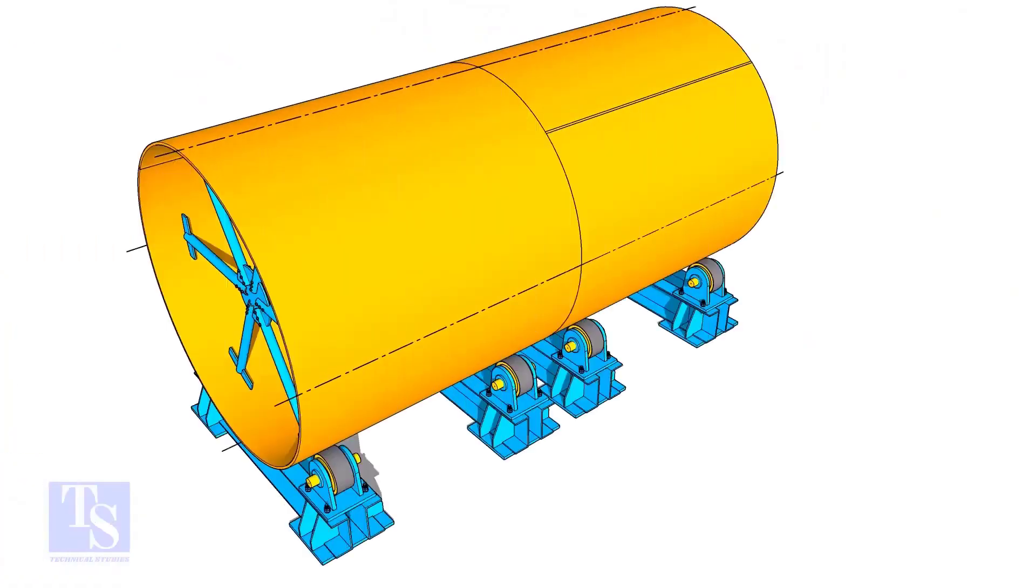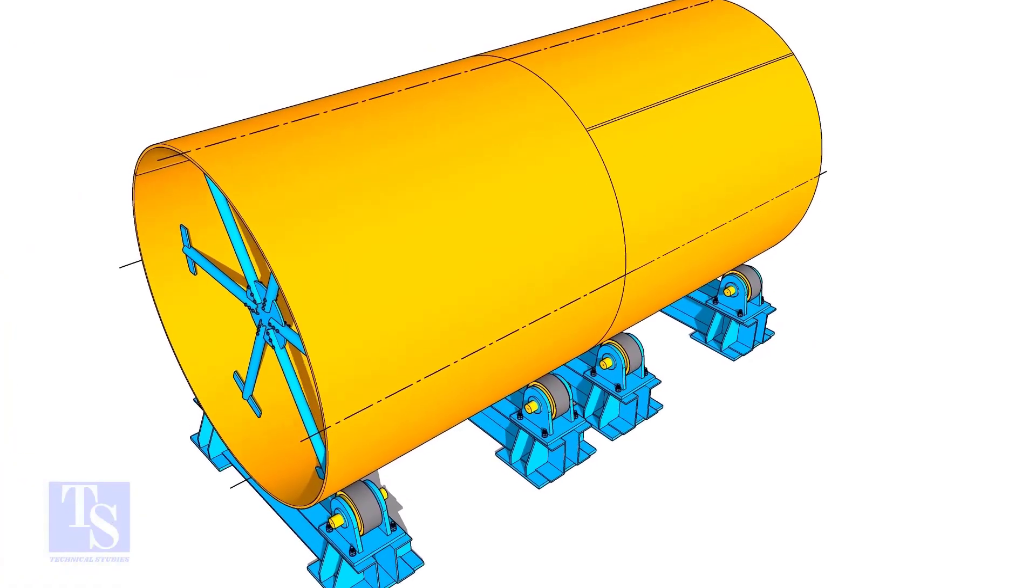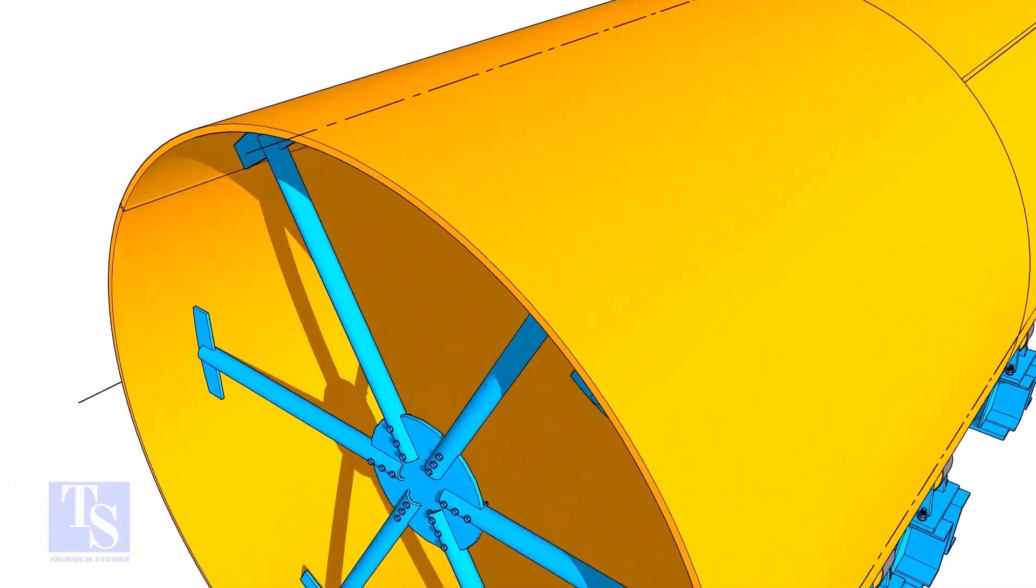Once the welding of the individual shells is complete, double the shells. Make sure the long seams of the shells are not in a line or too close.